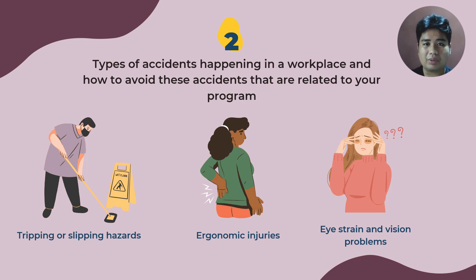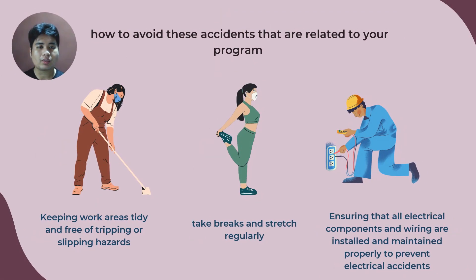It is important to be aware of these common types of accidents in our work environment. Since we have identified the problems, we may now proceed to the solutions. It is essential to keep the work area clean and well maintained — promptly clean up spills, use warning signs for wet floors, and ensure proper lighting in all areas to avoid slipping hazards. To prevent ergonomic injuries, it is important to set up a workstation ergonomically, use ergonomic equipment and tools, and take regular breaks to stretch and move.